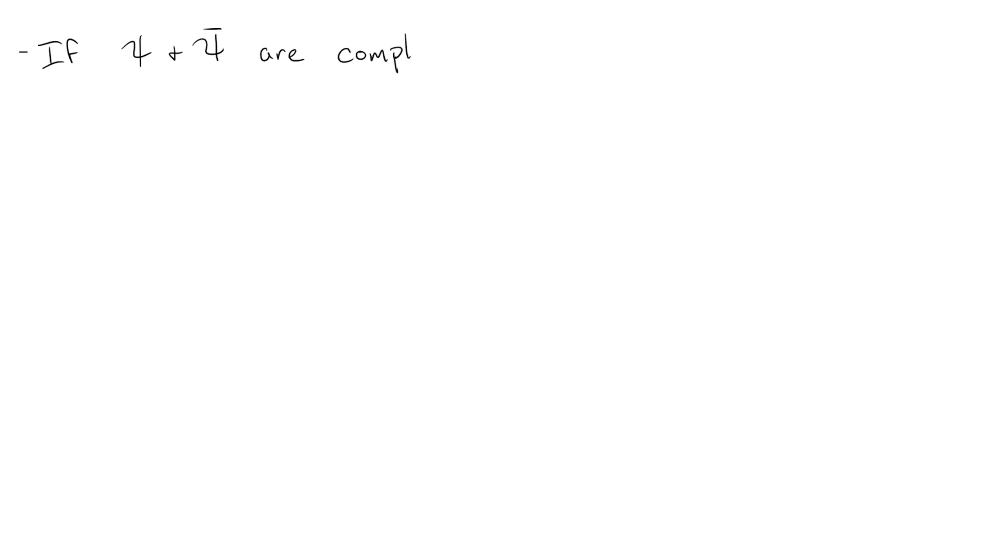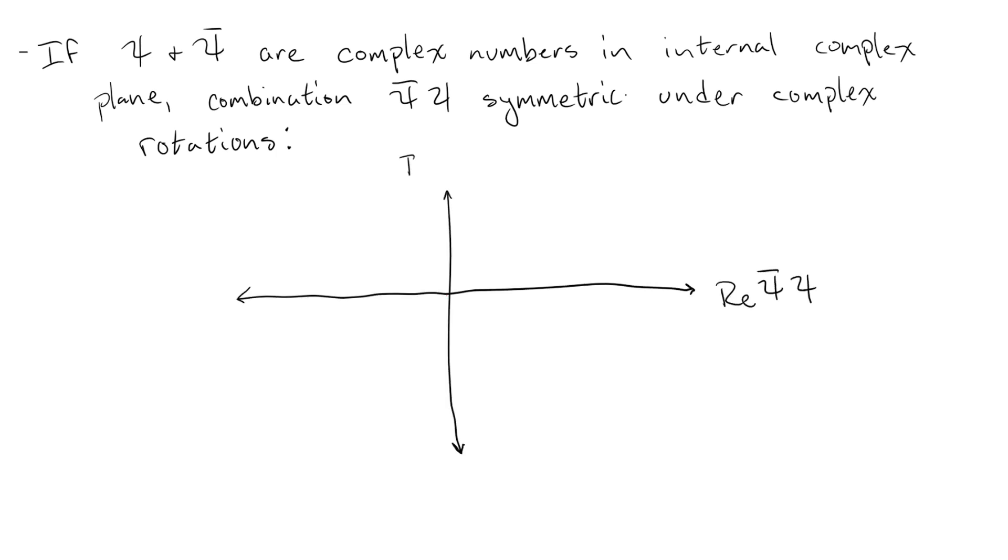This might immediately give us an idea for a simple internal symmetry that we can use. If these fermionic fields at each point just act like complex numbers in some internal complex plane, then we should have some symmetry of rotations in this complex plane. This is just because, when we rotate a complex number in one direction, we rotate its conjugate in the opposite direction. So, when we have pairs of spinors and their conjugates, the opposite rotations will cancel out and we have a symmetry, at least a global one.